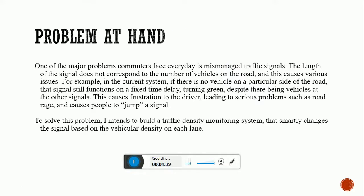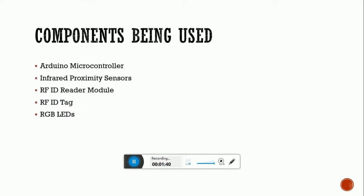For this project, we require the following components: an Arduino microcontroller, infrared proximity sensors, an RFID reader module, RFID tags, and RGB LEDs — red, green, and blue LEDs.